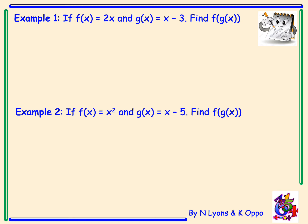Let's look at some examples. Example 1. If f(x) equals 2x and g(x) equals x minus 3, find f of g of x. This basically means we need to put the g function into the f function. First thing we need to do is clearly state what we're putting into the f function. g of x is x minus 3, so that goes in a bracket next to f.